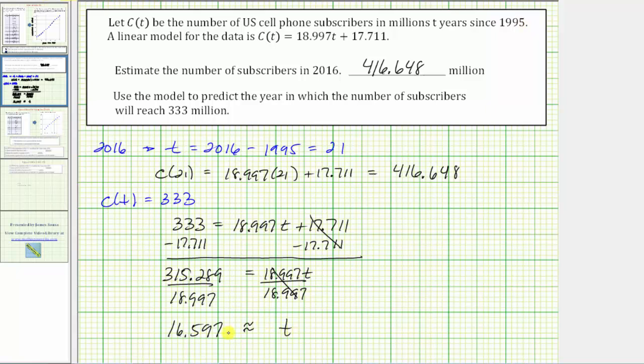We don't want to round this to 17 and then add that to 1995, because t = 16 corresponds to the beginning of the year 1995 plus 16, which equals the beginning of the year 2011. And t = 17 corresponds to the beginning of the year 1995 plus 17, which is the year 2012.